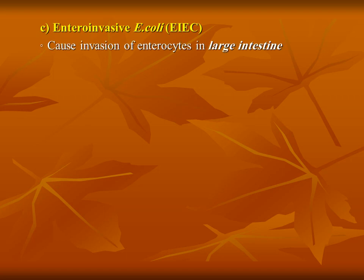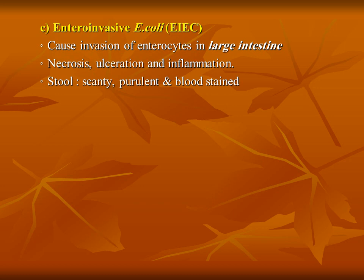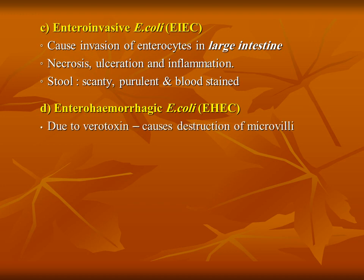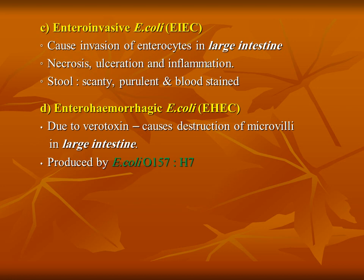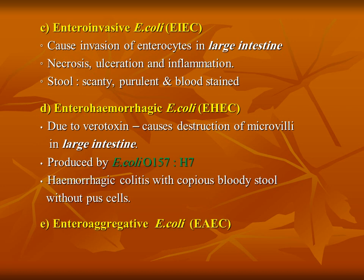Group 3: Enteroinvasive E. coli (EIEC) invades the large intestine, causing necrosis, ulcerations, and inflammation of the large intestine. Stool is scanty, purulent, and blood-stained due to invasion of bacteria into the enterocytes. Group 4: Enterohemorrhagic E. coli (EHEC) produces verotoxin, which causes destruction of the microvilli of the large intestine. The only representative serotype of this group is E. coli O157:H7, which causes hemorrhagic colitis with copious bloody stool.